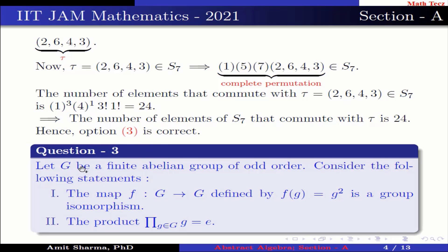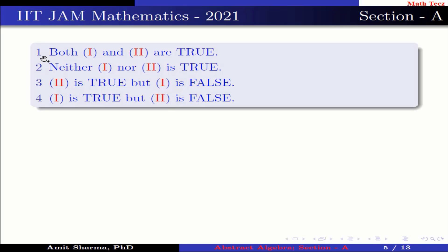Question number 3: Let g be a finite abelian group of odd order. Consider the following statements. Statement 1: The map f from g to g defined by f(g) = g² is a group isomorphism. Statement 2: The product of all g belonging to g equals the identity. Option 1: Both 1 and 2 are true. Option 2: Neither 1 nor 2 is true. Option 3: 2 is true but 1 is false. Option 4: 1 is true but 2 is false.